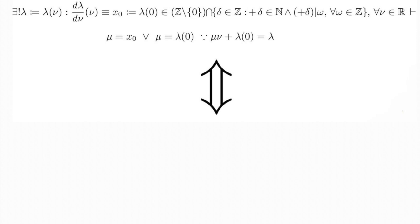All of it for all nu's belonging to the real numbers. From this fact I know that mu is equivalent to x index 0 or mu is equivalent to lambda of 0 since mu times nu plus lambda of 0 equals lambda.